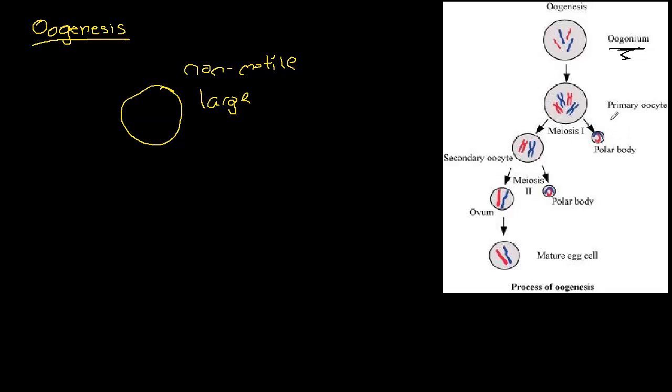This primary oocyte, also called an ootid sometimes, undergoes meiosis I to create a polar body and a secondary oocyte. Notice that the cytoplasm is mostly favored to this cell over here, as opposed to the polar body over here. The polar bodies will play very little role in the creation of the ovum. In fact,